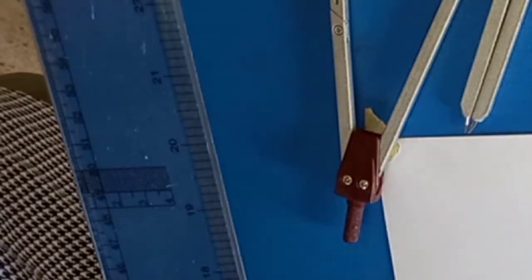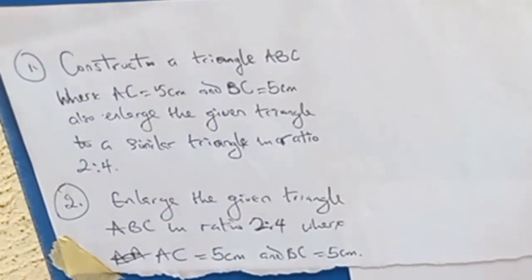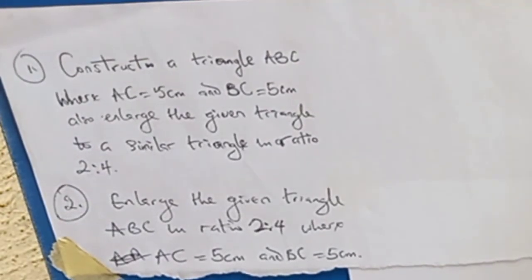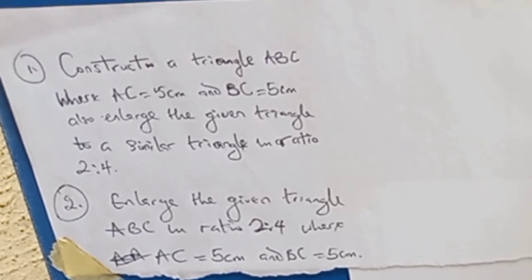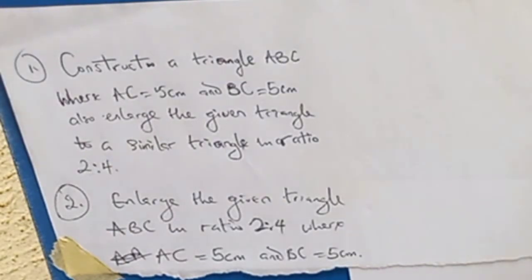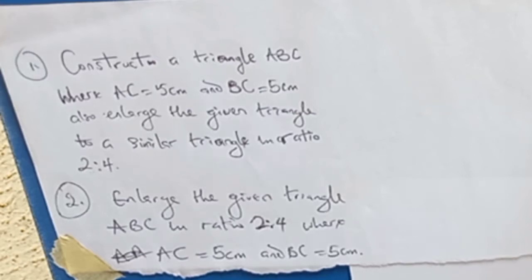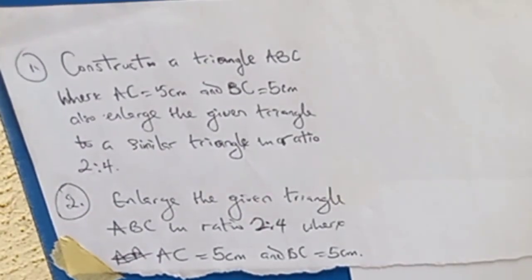Let's say a question is given which states: construct a triangle ABC where AC equals five centimeters and BC equals five centimeters, then enlarge the given triangle to a similar triangle in ratio two to four. The question can also be given in the format: enlarge the given triangle ABC in ratio two to four, where AC equals five centimeters and BC equals five centimeters. It's the same question in a different format.